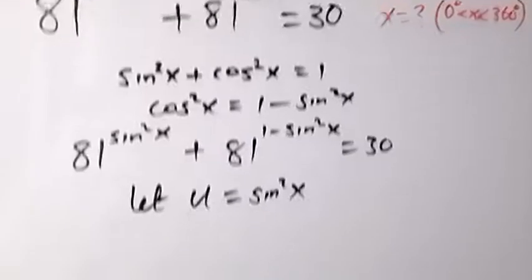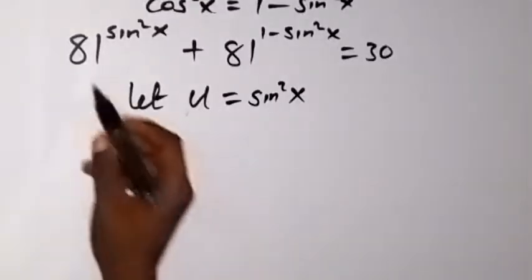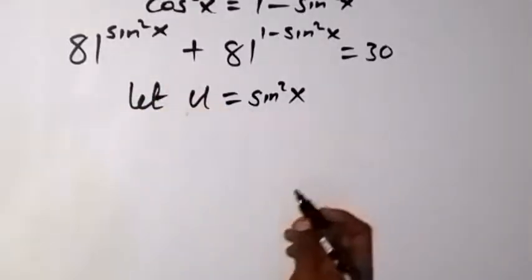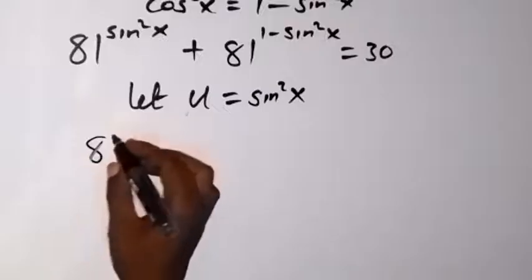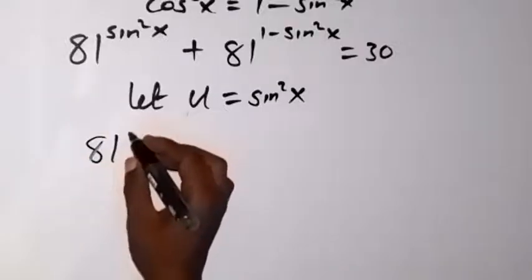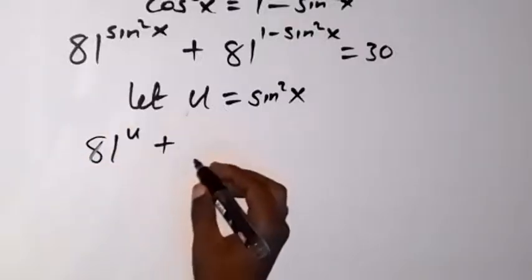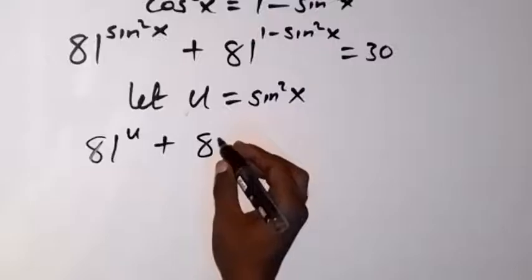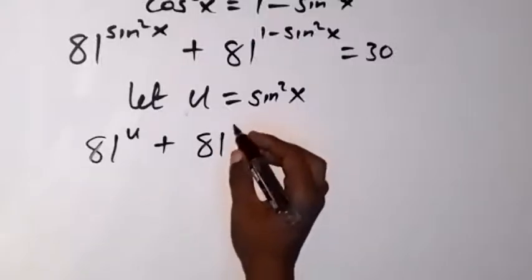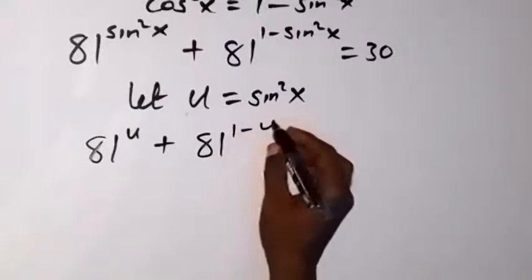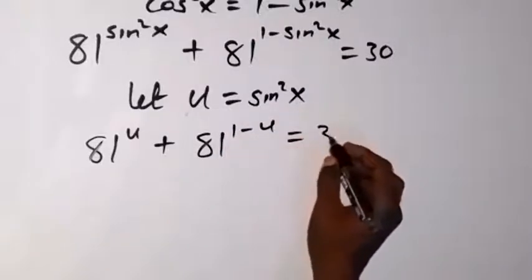We write the equation again in terms of u. We have 81^u plus 81^(1 minus u) equals 30.